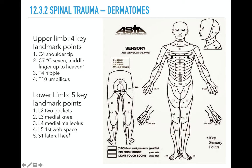Same with the lower limb — a few key landmarks. L2 is your two pockets: if you put your hands in your pockets, that's where L2 is. L3 is the medial knee. L4 is medial malleolus. L5 is the first web space. And S1 is the lateral foot.